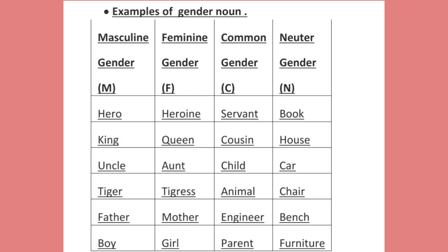In masculine: king, uncle, tiger, father, boy — these are all male. In feminine: tigress, auntie, mother, girl — all these are female. Common gender: child, animal, engineer, parents — these are common gender. And neuter gender: chair, bench, furniture — these are known as neuter gender.